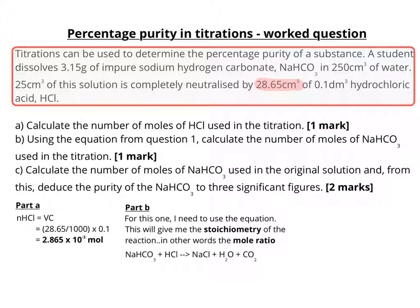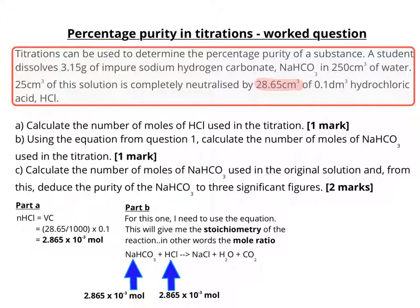We already know what the number of moles of HCl is, because we calculated it in the previous question. Looking at the equation, there is a 1 to 1 mole ratio, so the sodium hydrogen carbonate must also be 2.865 × 10⁻³ moles in this particular titration.